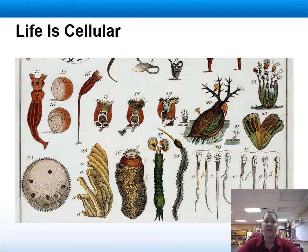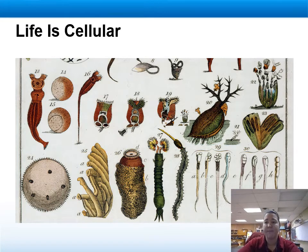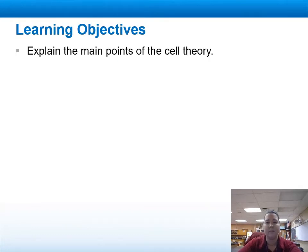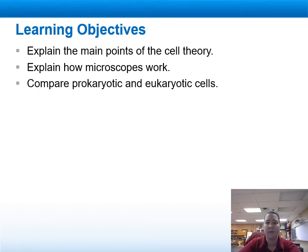Welcome to Unit 5, Lecture 1. In this lecture, we're going to talk about how life is cellular. Learning objectives: explain the main points of cell theory, explain how microscopes work, and compare prokaryotic and eukaryotic cells.